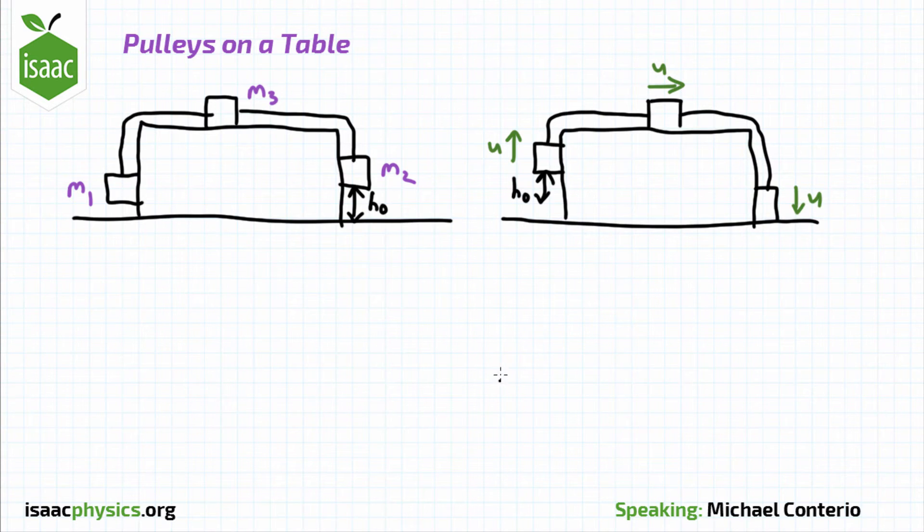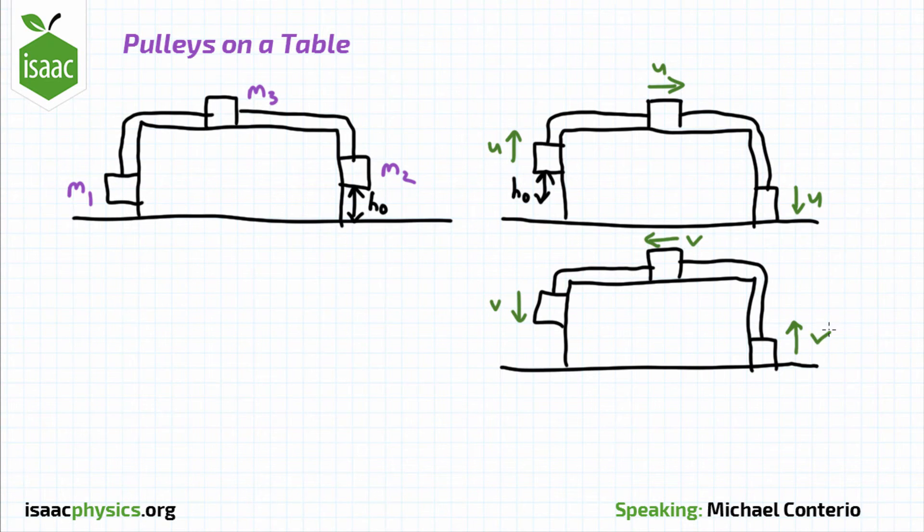Then, when the mass m2 is picked up again, when the string goes taut, all the masses will end up with a new speed v in the opposite direction.